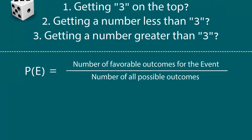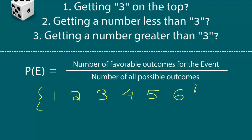We are rolling a dice. What are all possible outcomes? We can get the number 1, 2, 3, 4, 5, or 6 on top. These are all possible values that can show up when we roll the dice. So the number of possible outcomes is 6.